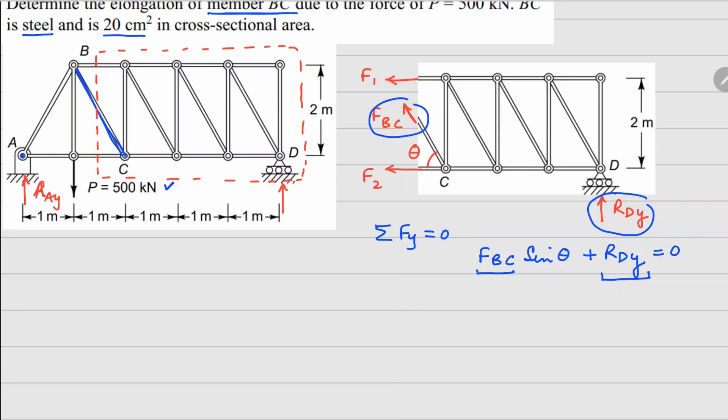This one is ray, this one is rdy. For this whole structure, if I do force balance in y direction, ray plus rdy is going to balance your 500 kilonewton force.